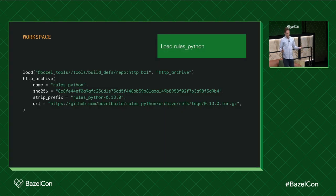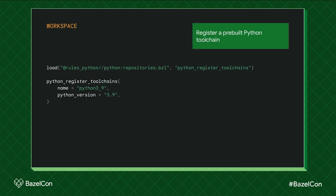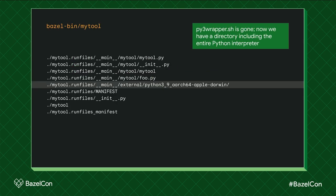This is where we start using some external rule sets. There's one called rules_python which gives you additional things you can use to build Python programs with Bazel. One of the rules it provides is called python_register_toolchains. It's pretty simple to use — we just give it a name and a Python version. This rule is Bazel platform-aware, so it will download a pre-built Python interpreter of the correct version for the platform you're targeting. If we rebuild MyTool, we can see that now instead of py3wrapper we have a link to a platform-appropriate Python interpreter, making builds much more reproducible.